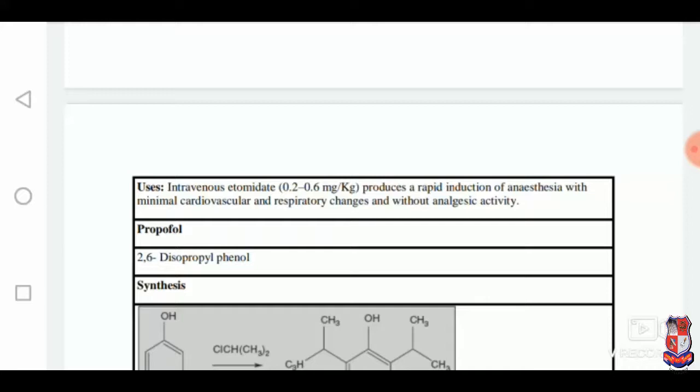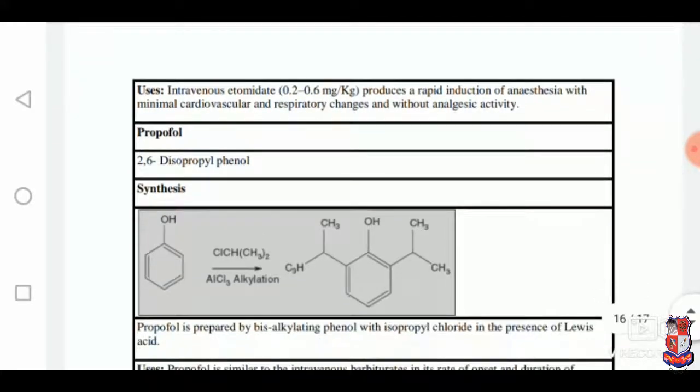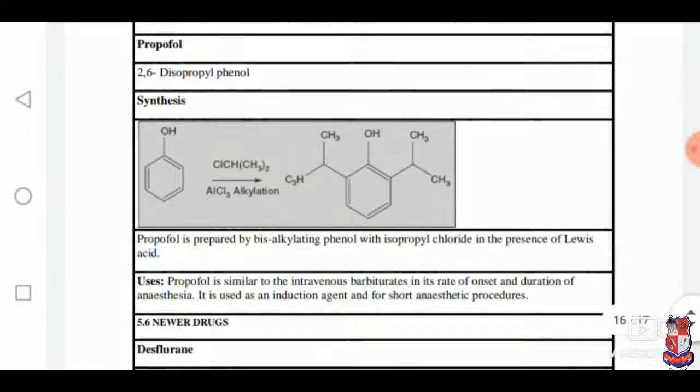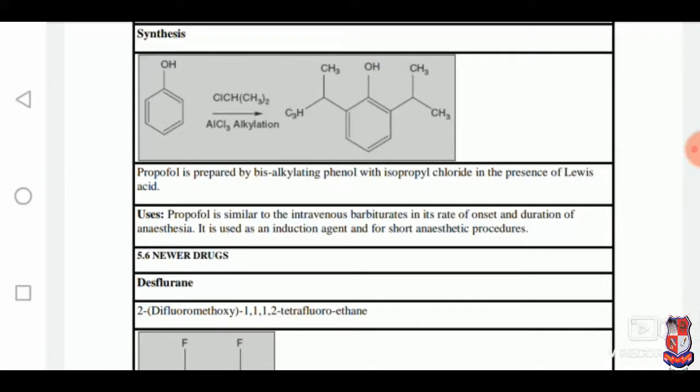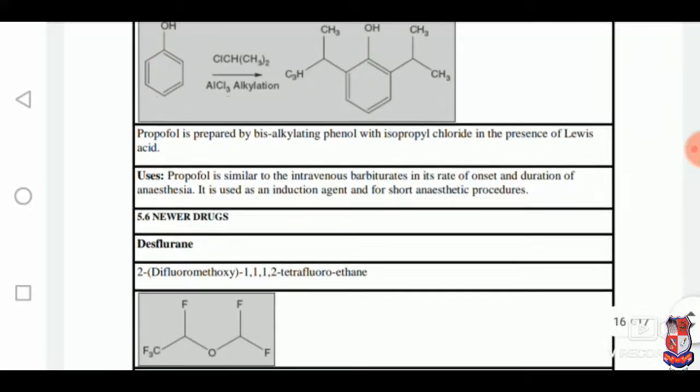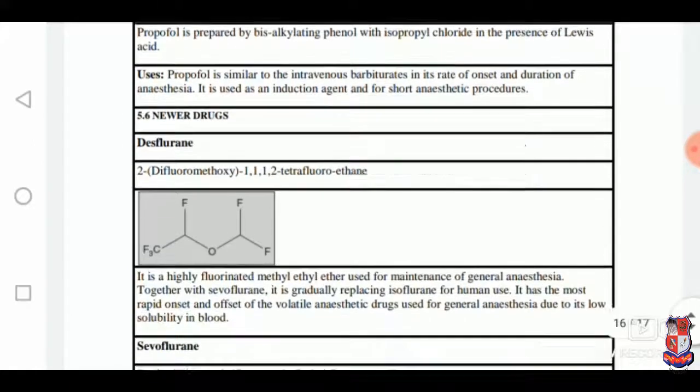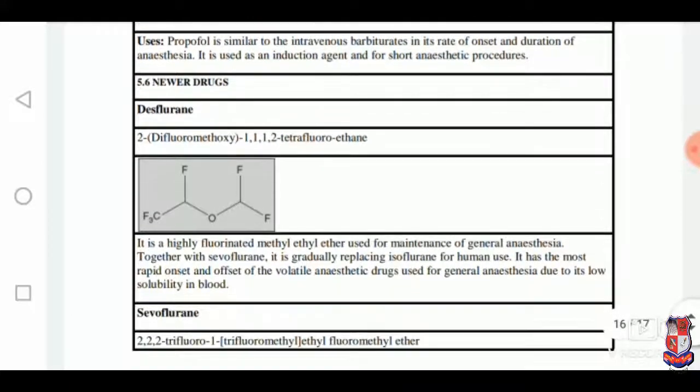Next one is propofol, prepared by alkylating phenol with isopropyl chloride. It is used similar to intravenous barbiturates in its rate of action and duration of anaesthesia.